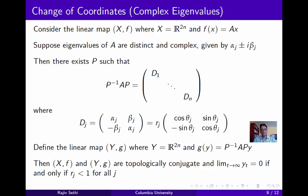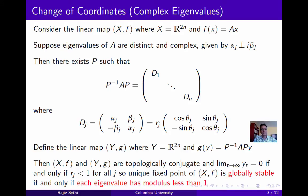Each of the two-dimensional systems involves a rotation and a contraction if r_j is less than 1, and a rotation and an expansion if r_j is greater than 1. Therefore, in the simpler system (Y, g), the unique rest point is stable if and only if r_j is less than 1 for all j. This means that all eigenvalues must have a distance from the origin of less than 1 in the complex plane. In other words, the unique fixed point of (X, f) is globally stable if and only if each eigenvalue of A lies in the interior of the unit disc in the complex plane.